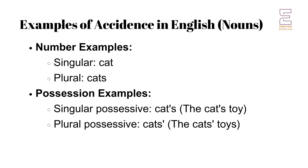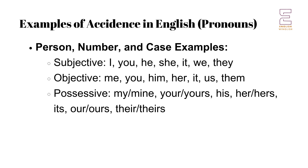Nouns. Number: nouns inflect to show singular and plural forms — singular: cat; plural: cats. Possession: nouns inflect to show possession — singular possessive: the cat's toy; plural possessive: the cats' toys.